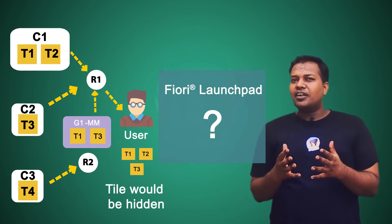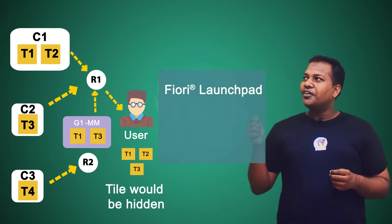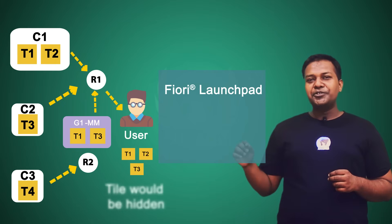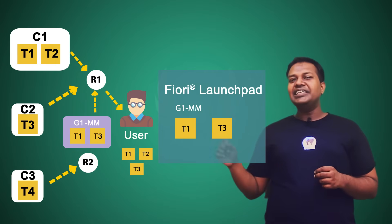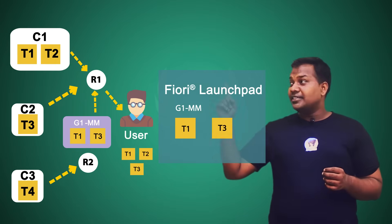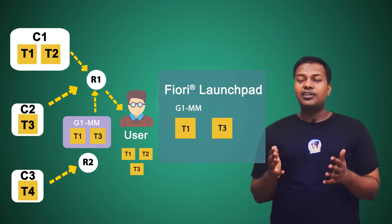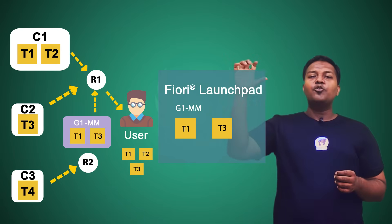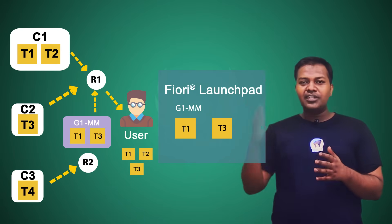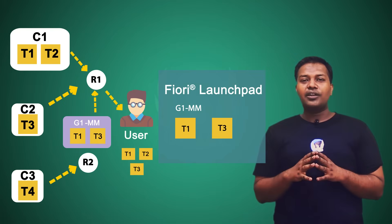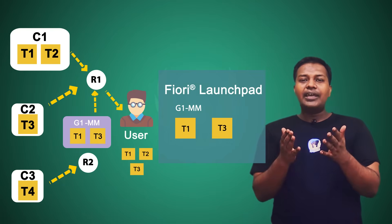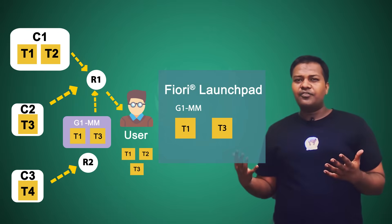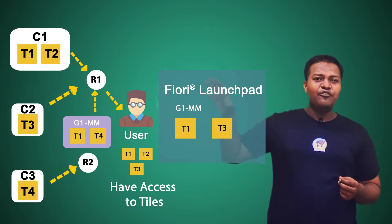Now, what tiles will the user see in the launchpad? The user will be able to see tiles T1 and T3. Even though they have access to T2, it will be hidden and not shown. The user will see tiles T1 and T3 inside a group called G1 — labeled MM with a short description — and this is exactly what the user will see when launching the Fiori launchpad.